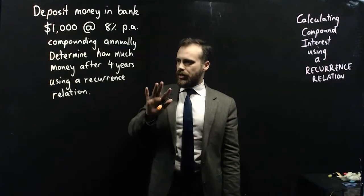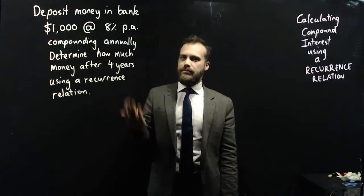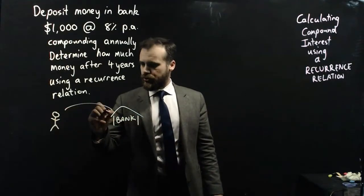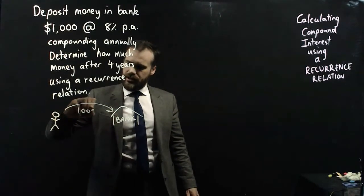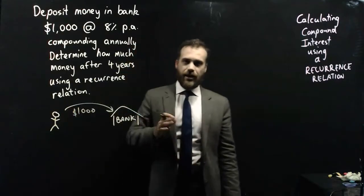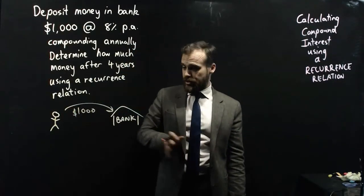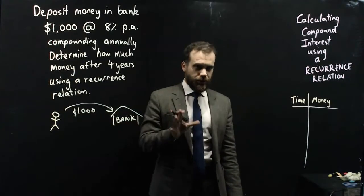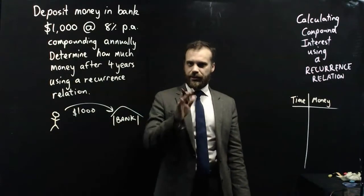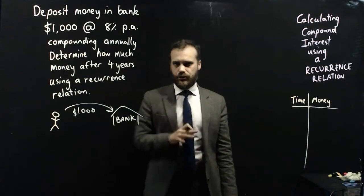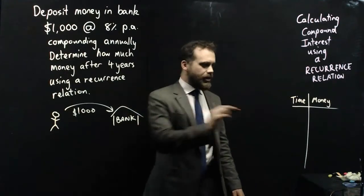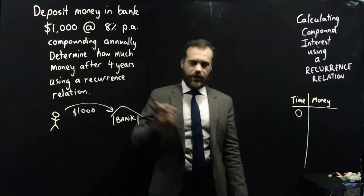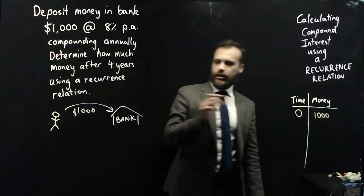We're going to think about what this really means. So you're a person, and this is a bank, and you're going to put $1,000 into that bank. At the end of every year, the bank is going to pay you 8% of whatever you put in. I'm just going to visualize this and talk about it a little bit, but this isn't really what we're doing when it comes to a recurrence relation. At time zero, at the beginning, we have $1,000.